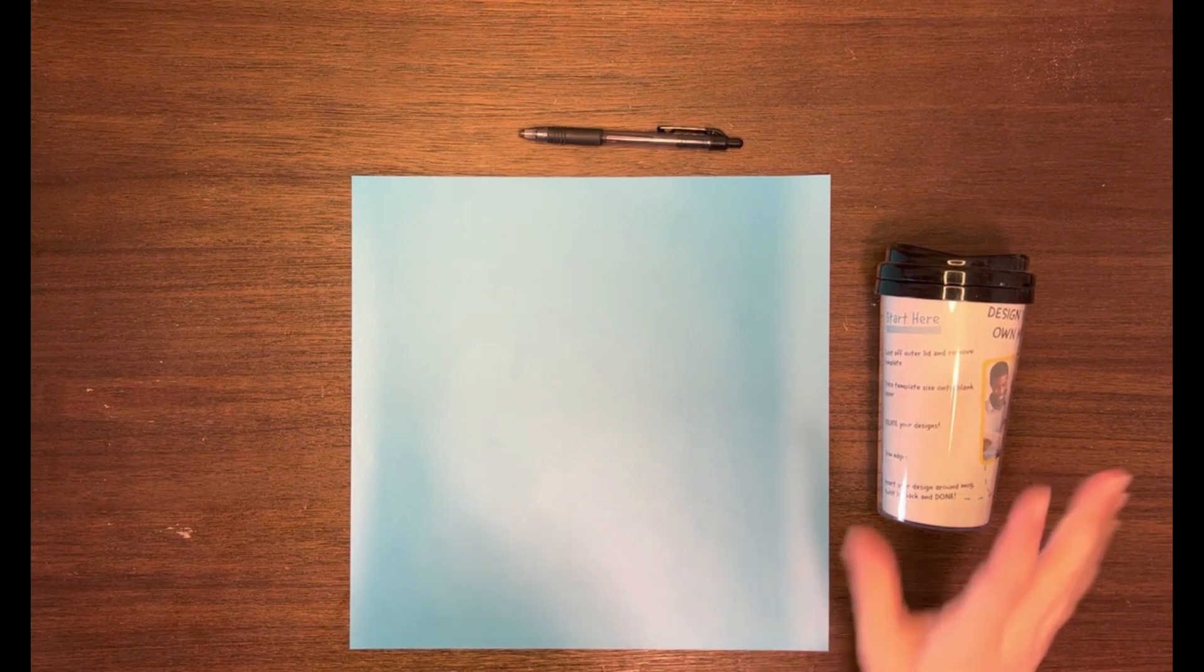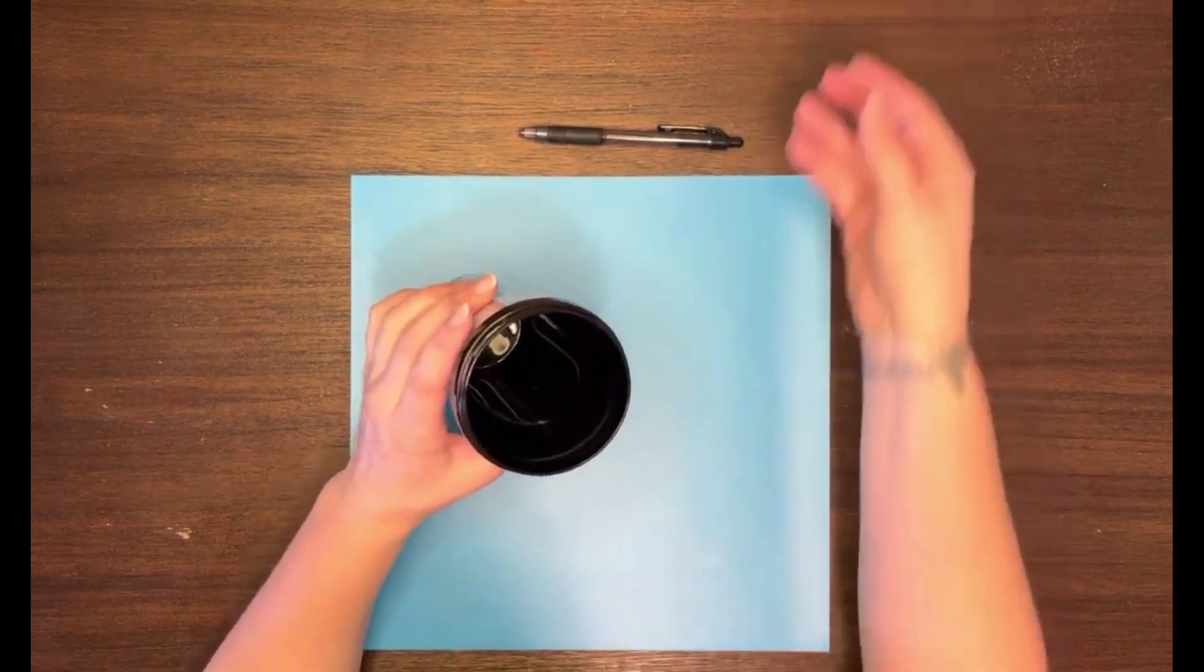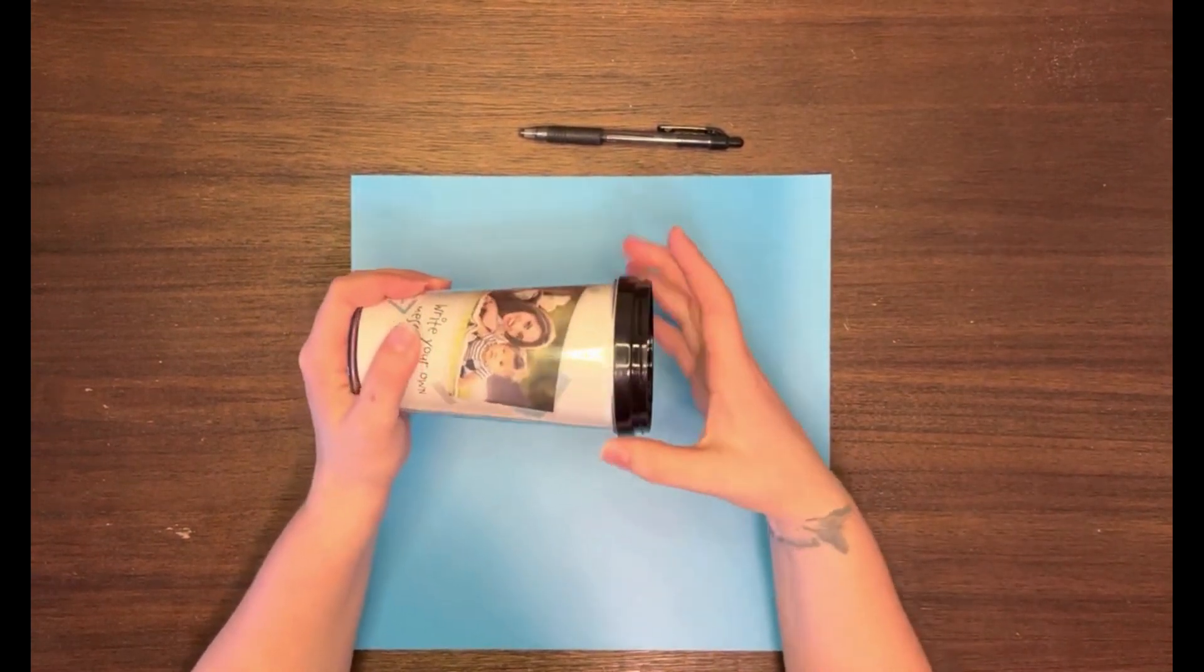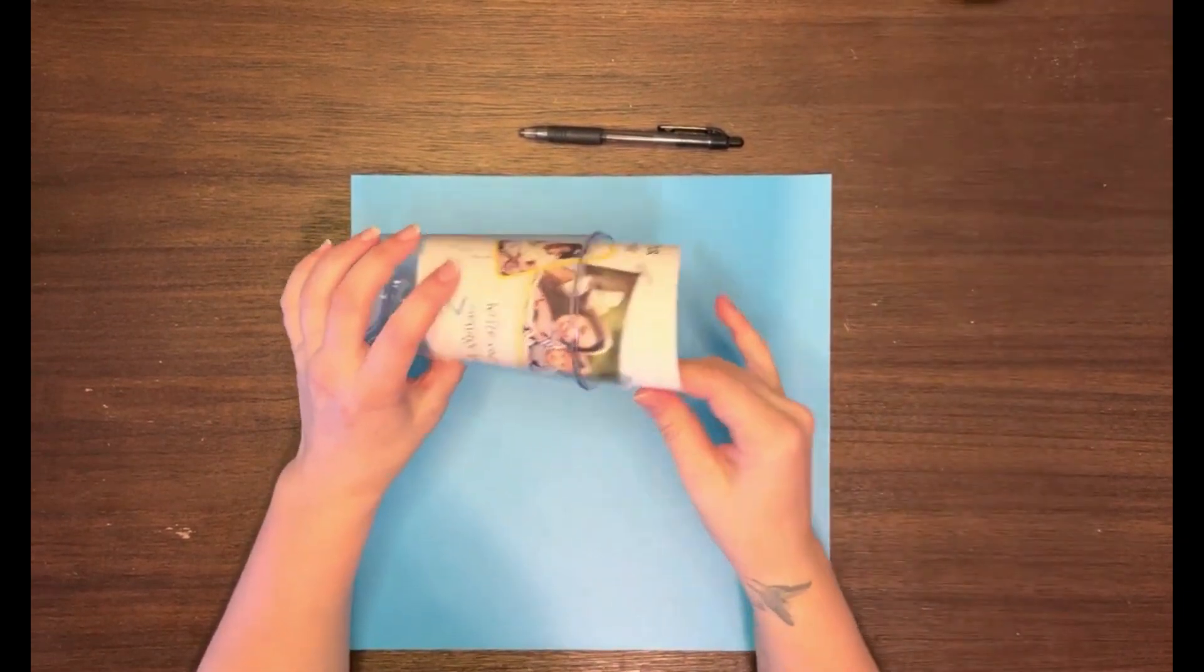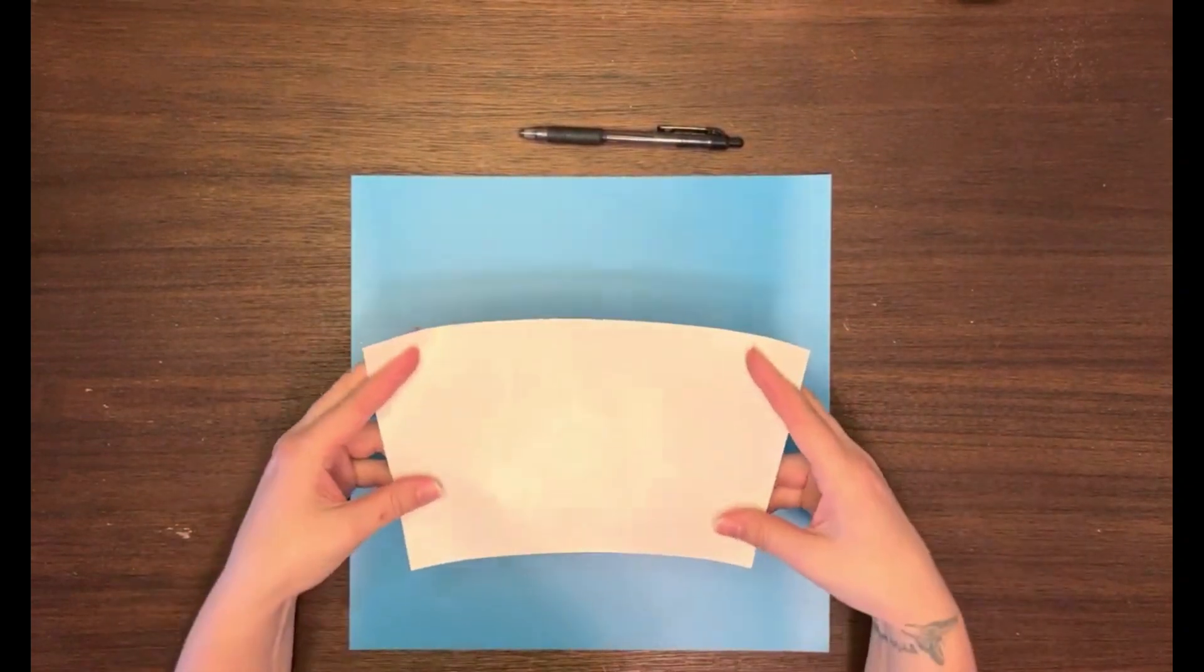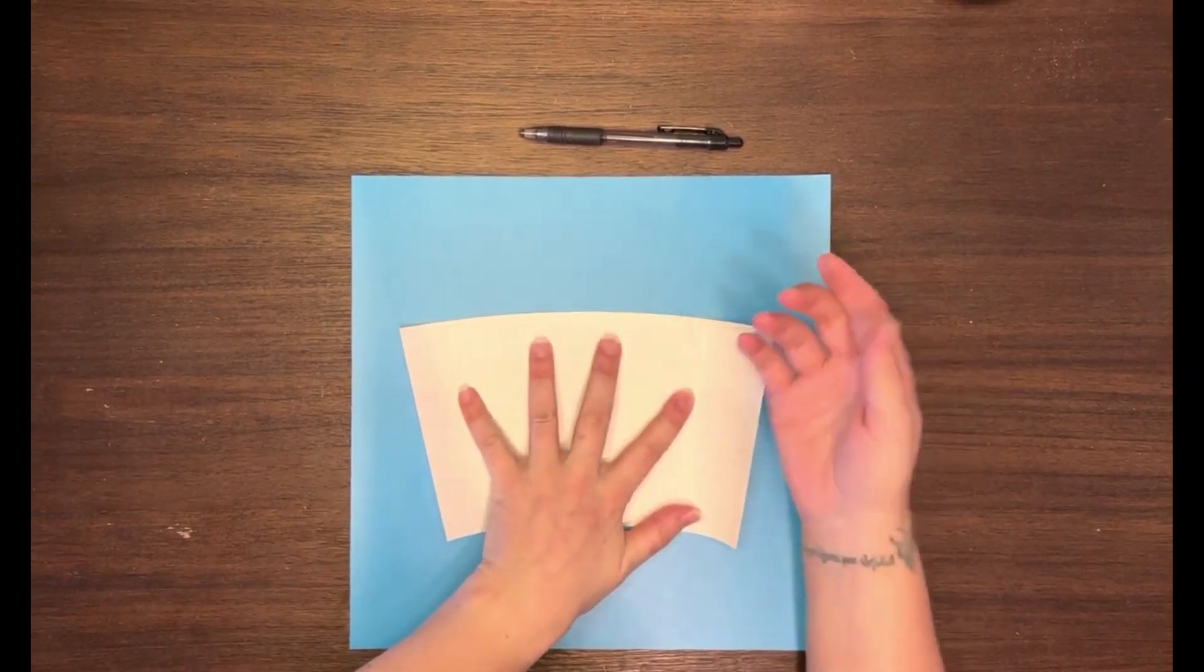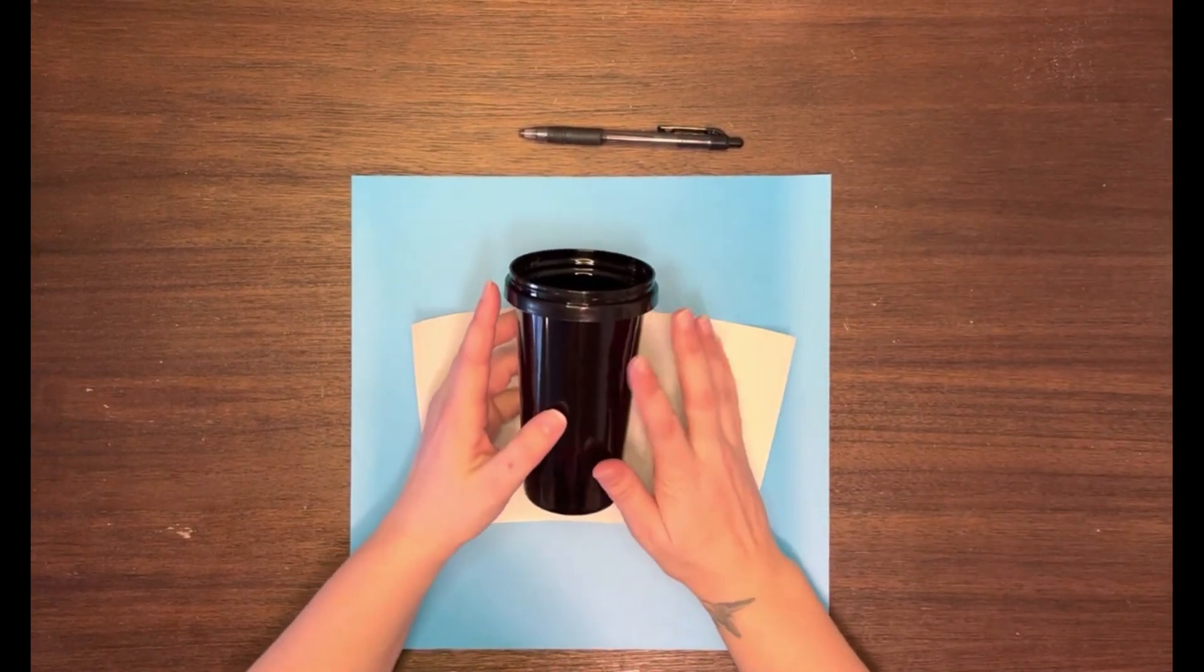The first step is to take your travel mug and remove the lid. This top part unscrews from the bottom. The part we need is the paper template inside. Set the mug aside for now. This template is what you'll trace to make a cutout that wraps around your cup.